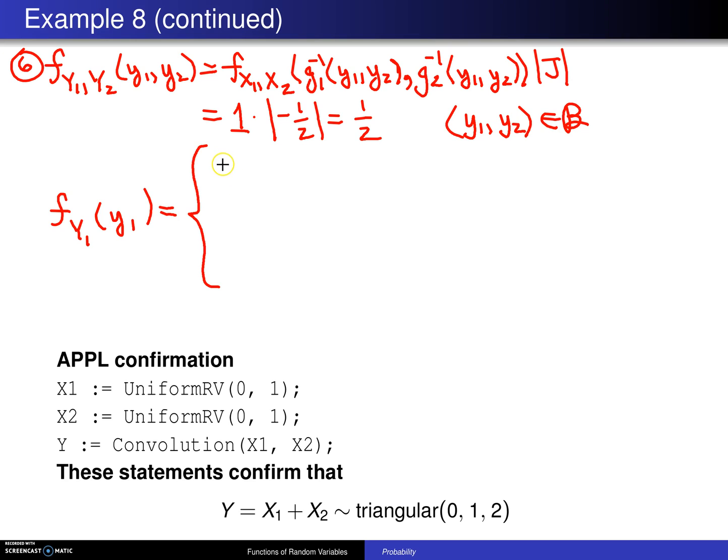And what they will be is they will be the integral from minus y1 to positive y1 of one-half dy2. That's an easy integral to calculate. It turns out to be just y1. And here you will have the integral from y1 minus 2 up to 2 minus y1. Again, the integrand is one-half, which is the joint probability density function dy2. And when you integrate that out, you get 2 minus y1. This is good for y1 values between 0 and 1. This is good for y1 values between 1 and 2.